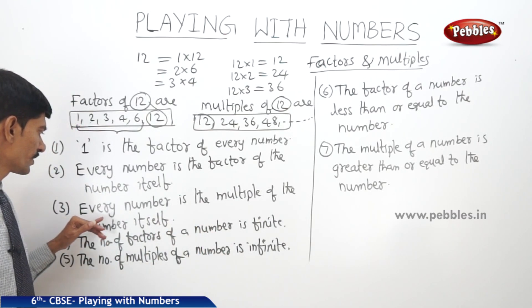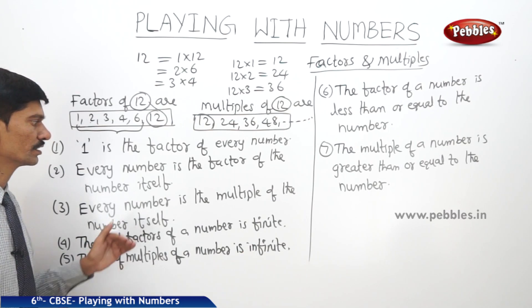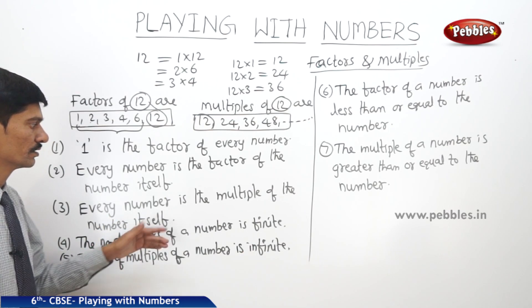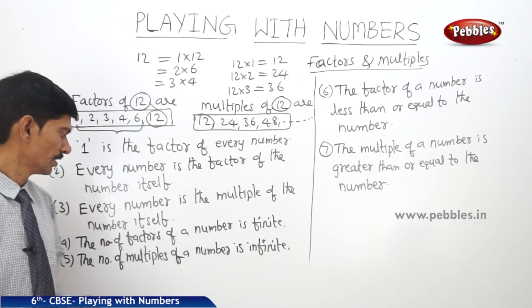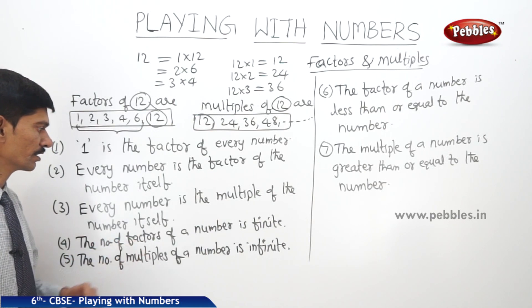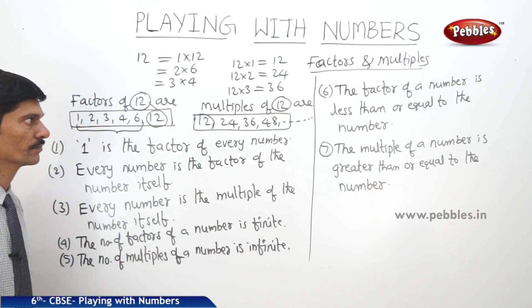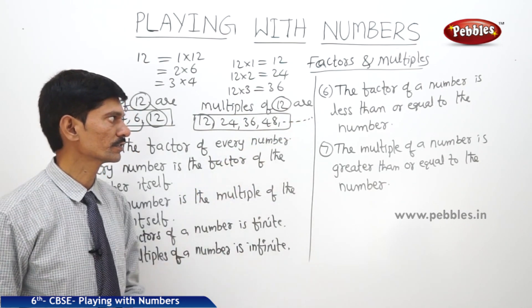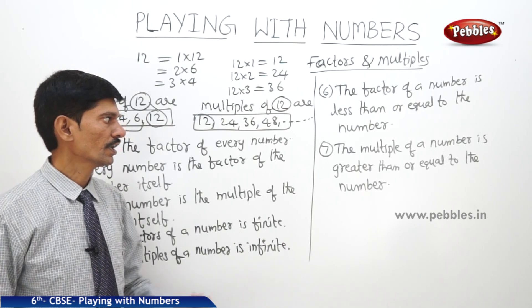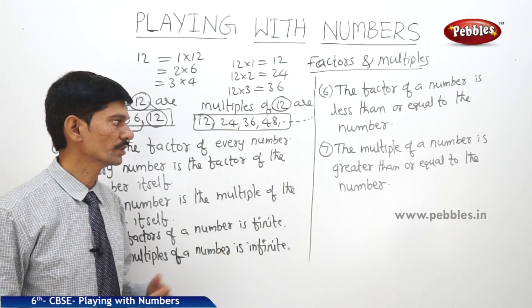Every number is the multiple of the number itself, and this is the smallest multiple of the given number. The number of factors of a number is finite, and the number of multiples of a number is infinite. The factor of a number is less than or equal to the number, and the multiple of a number is greater than or equal to the number.